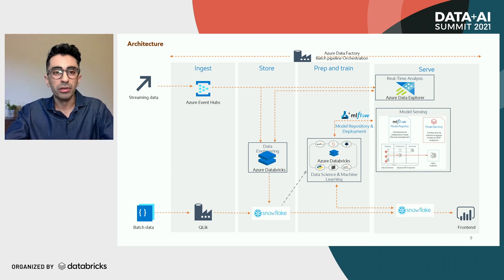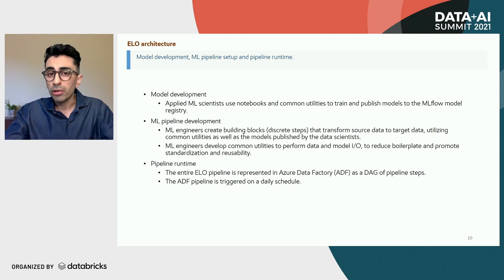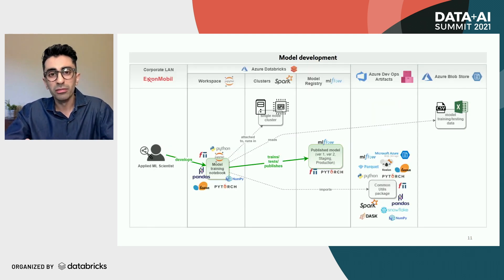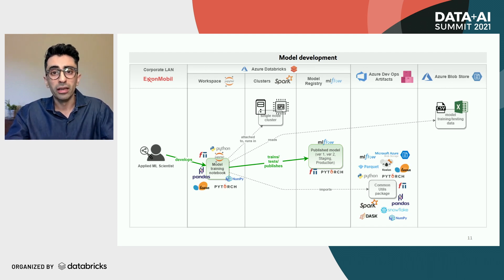Let's dive a little deeper into the architecture and see how our system looks during model development, ML pipeline development, and at runtime. When an applied ML scientist wants to experiment and develop a new model, they use the Azure Databricks workspace. Within this workspace, we use a Jupyter notebook to experiment with different models. The first thing we do is load the data — from Snowflake if it's unsupervised learning, or labeled data from Azure Blob Storage for supervised learning.